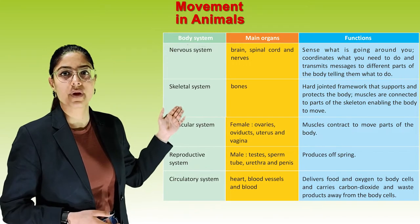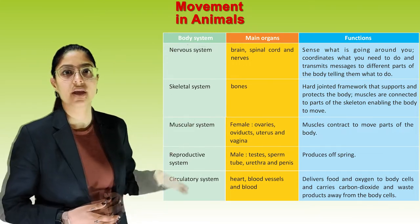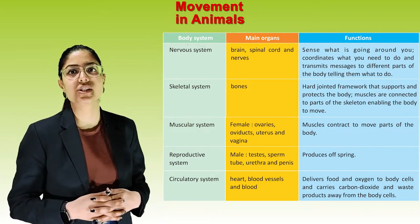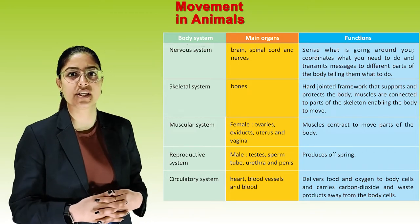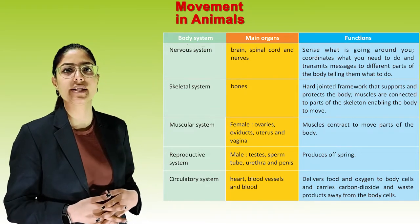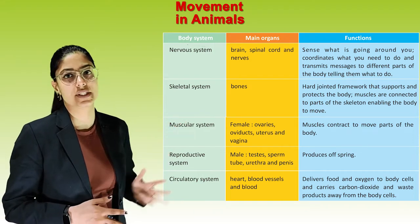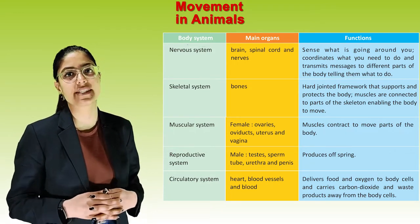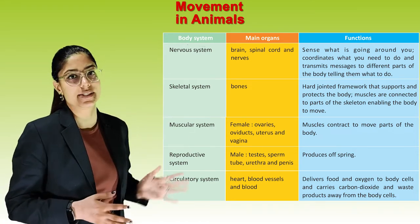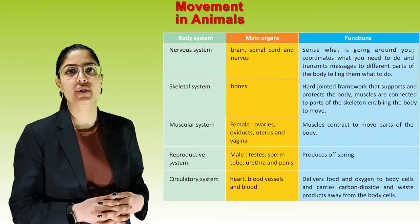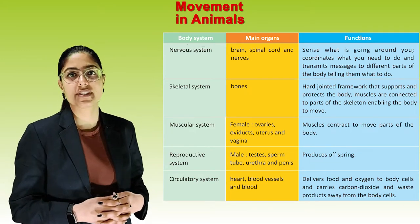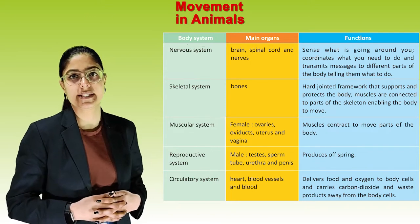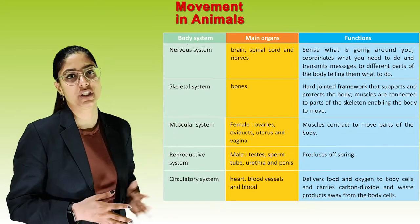See this table of body systems, main organs, and functions. The nervous system — brain, spinal cord, and nerves — coordinates what is going on around you, and transmits messages to different parts of the body. The skeletal system — bones — provides a hard jointed framework that supports and protects the body, with muscles connected to parts of the skeleton enabling movement. The muscular system — muscles — contracts to move parts of the body. The reproductive system — male: testes, sperm tube, urethra, and penis; female: ovaries, oviduct, uterus, and vagina — produces offspring. The circulatory system — heart, blood vessels, and blood — delivers food and oxygen to body cells and carries carbon dioxide and waste products away.